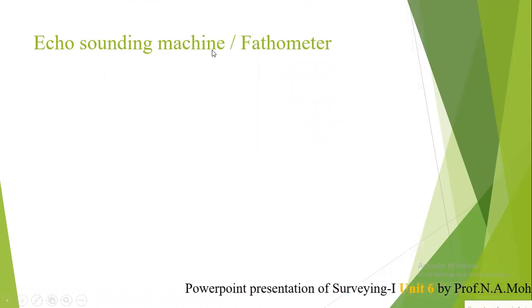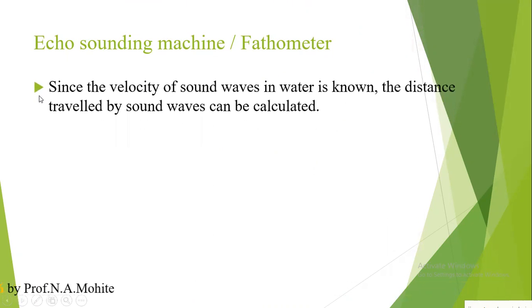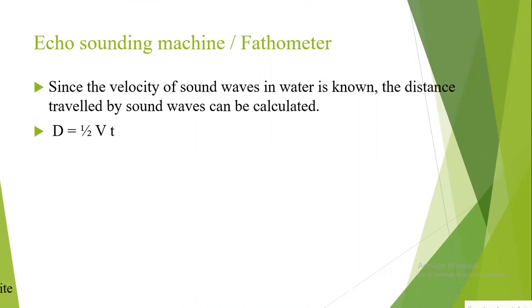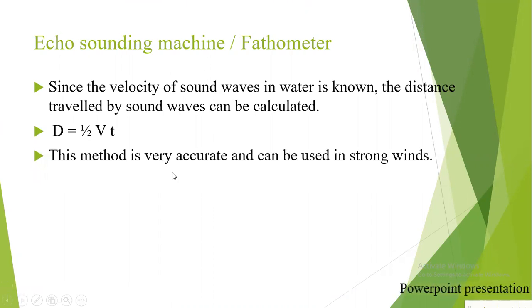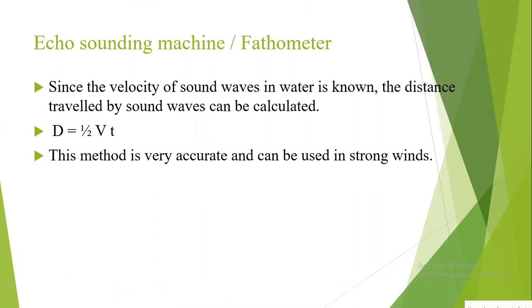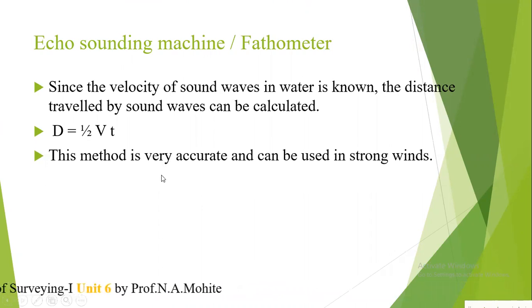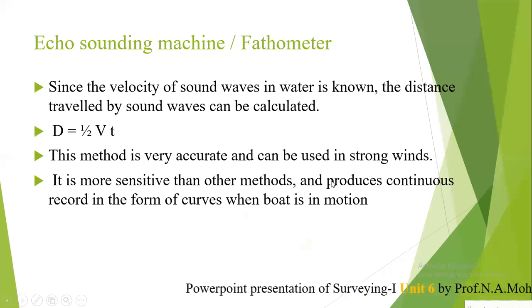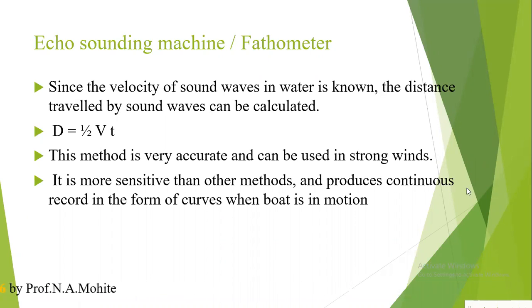The next method is the echo sounding machine, also called the fathometer. Since the velocity of sound waves in water is known, the distance traveled by sound waves can be calculated using the formula D = ½ × V × T. This method is very accurate and can be used in strong winds. It is used when the depth of a large river exceeds 10 meters or in seas. It is more sensitive than other methods and produces a continuous record in the form of curves when the boat is in motion.